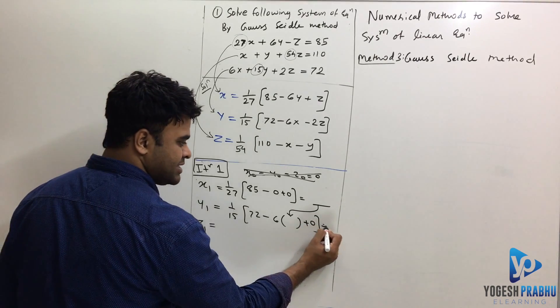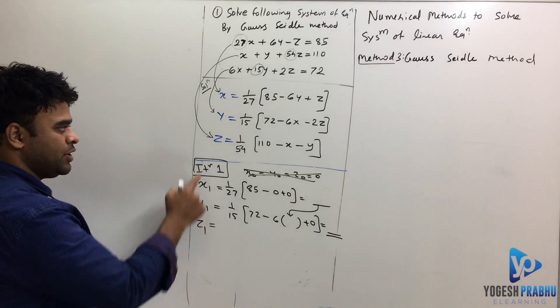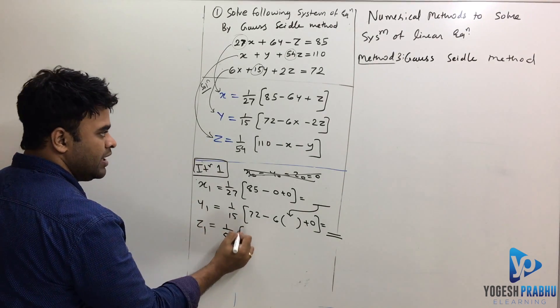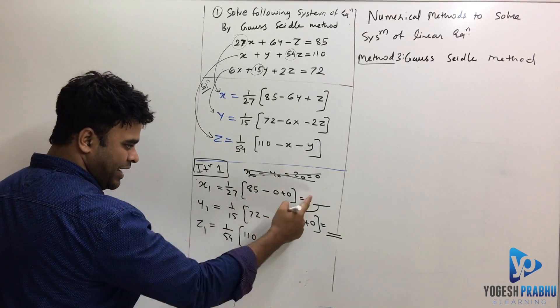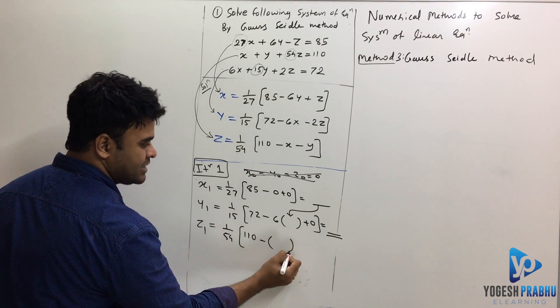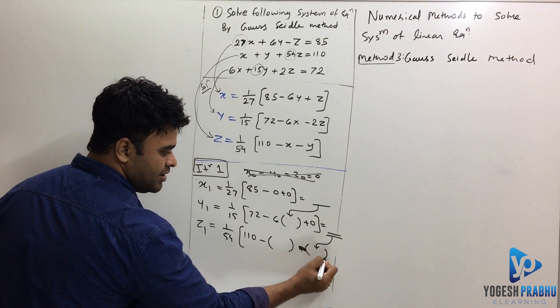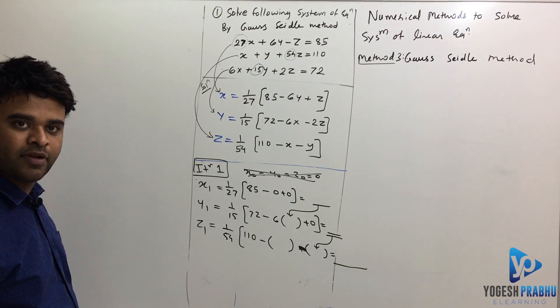Now after solving this, you will get some answer here and for finding z1, you will use this equation of z, which is 1 upon 54 and then this is 110. Well, you have x value, so you will write that value x here, then y value you will get from here and write that over here and that's how you are going to get z1.